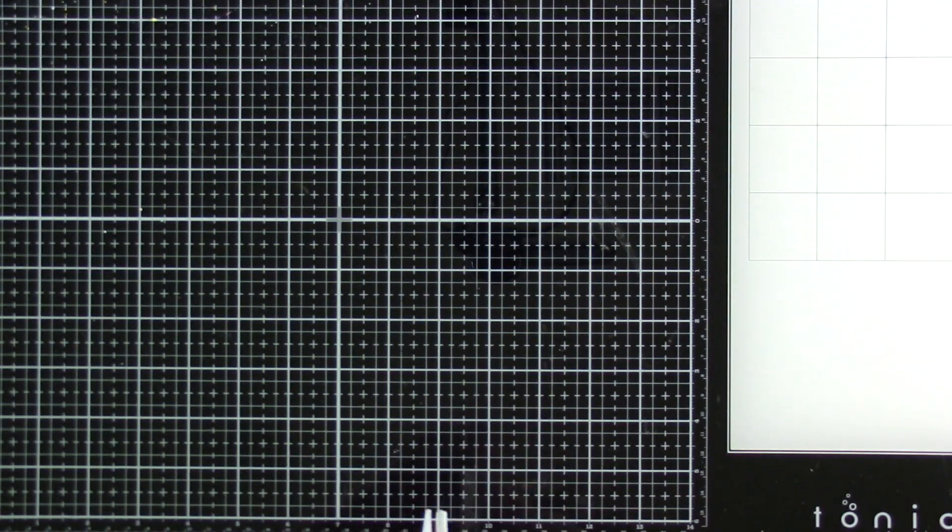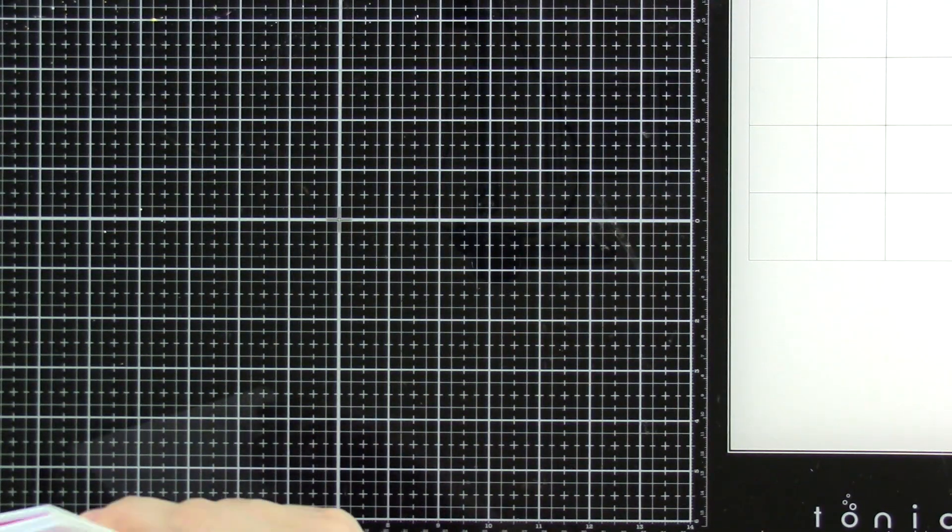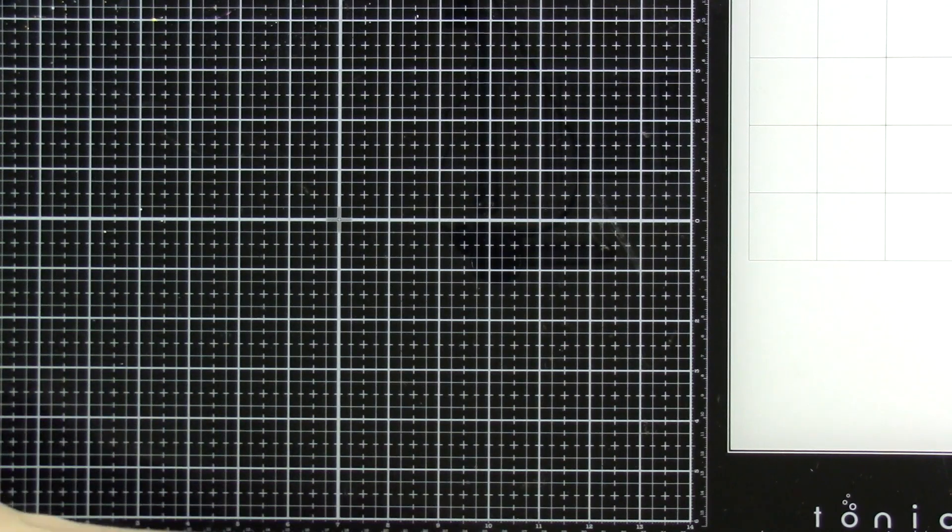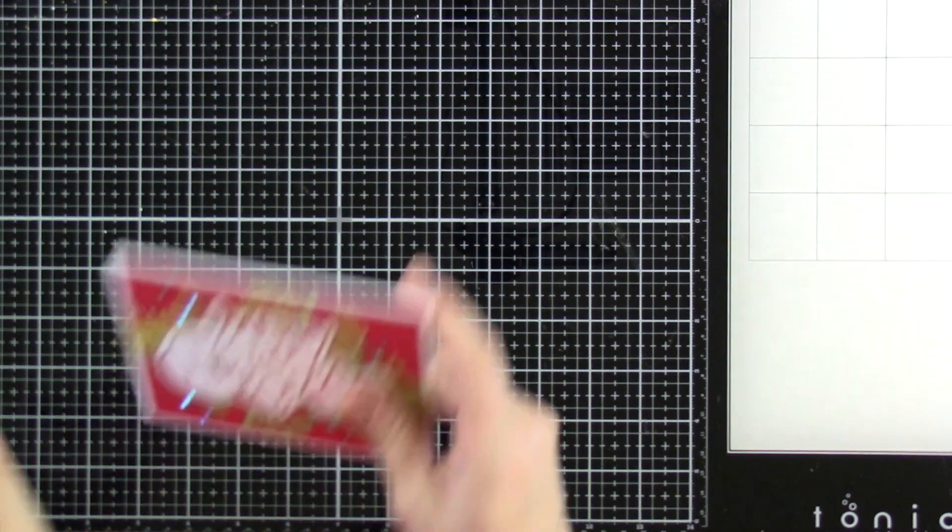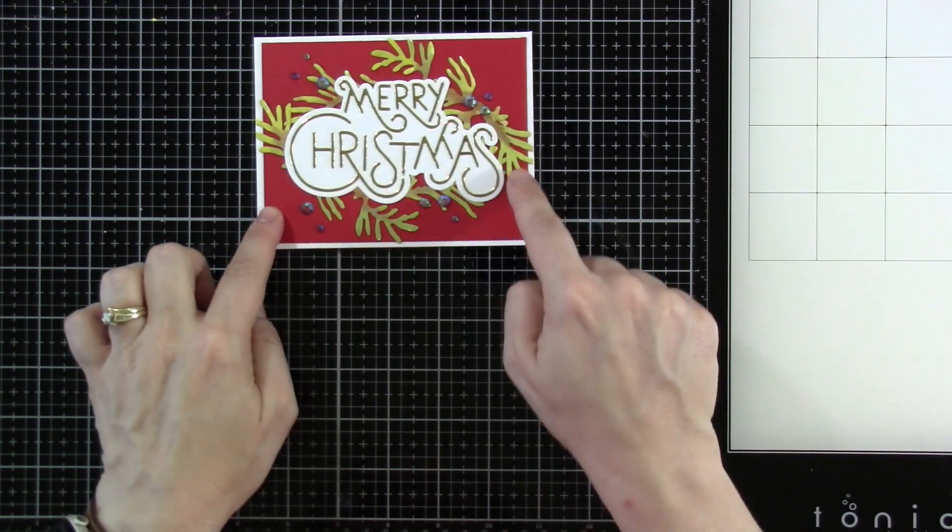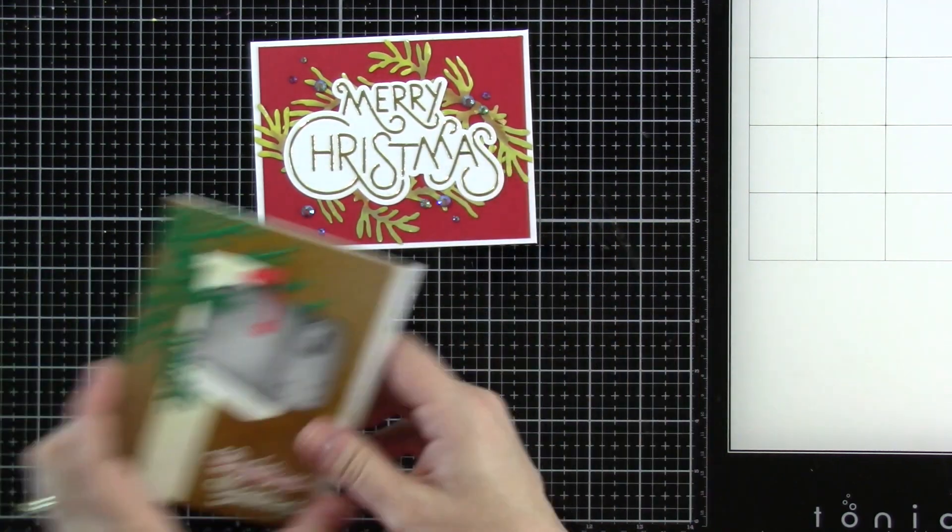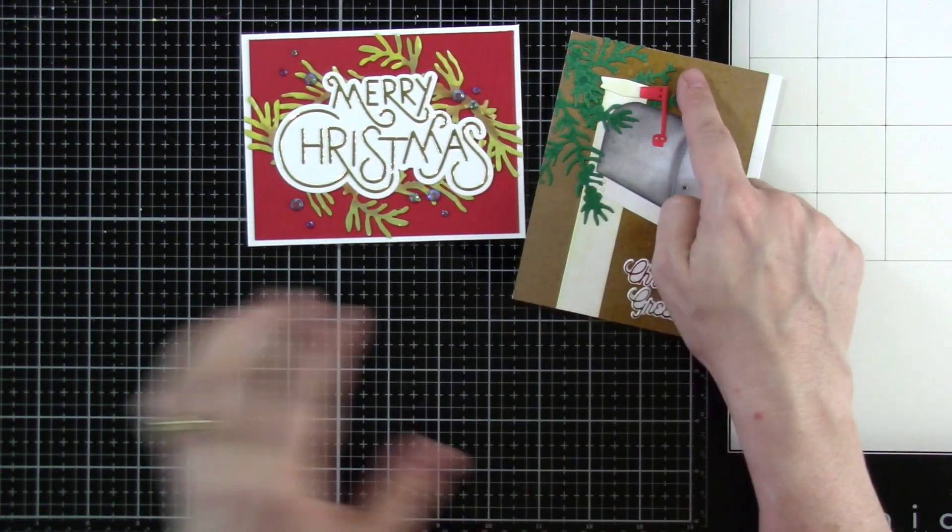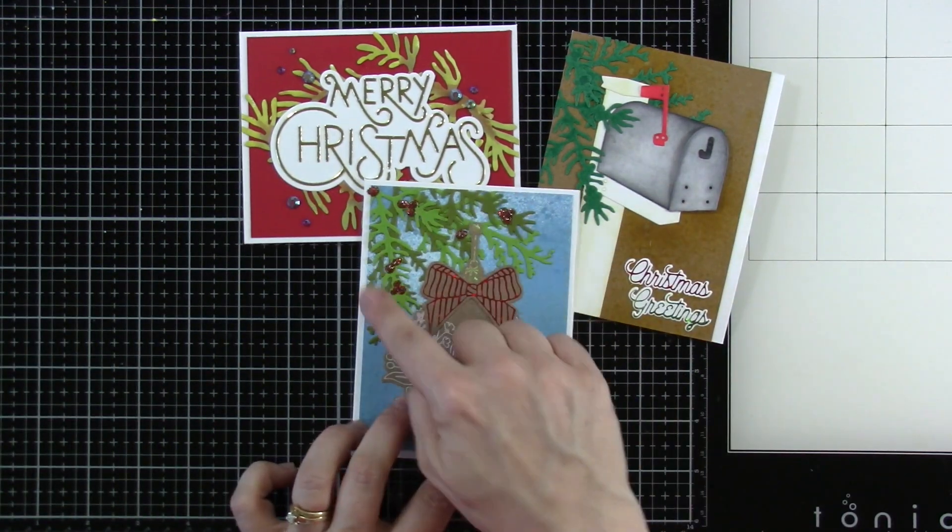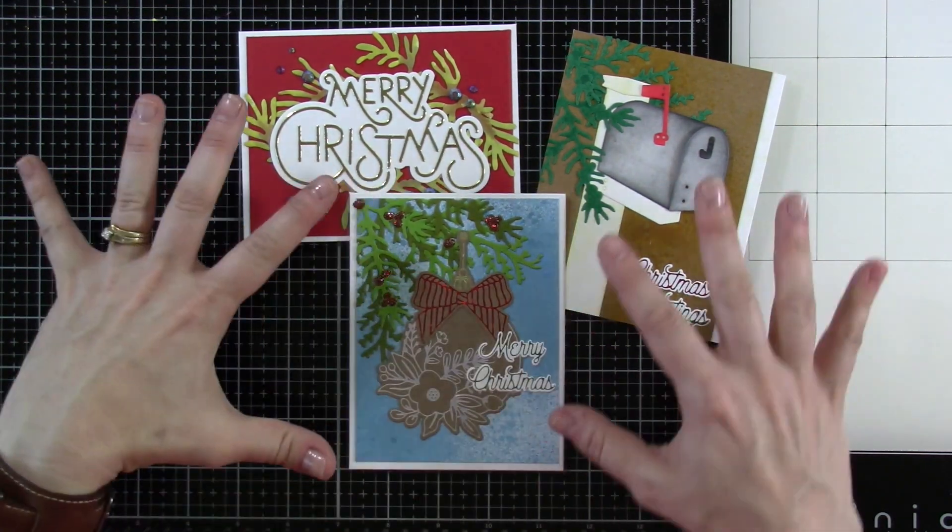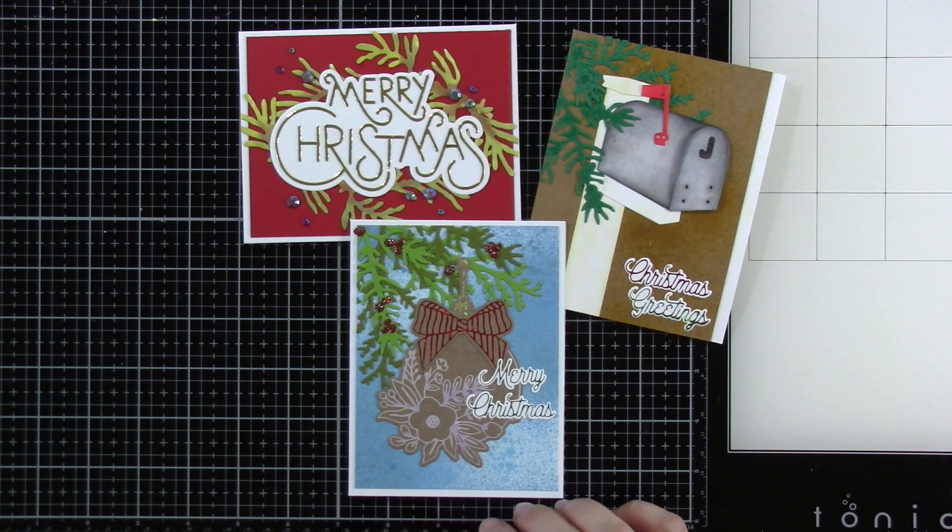Then we have the Winter Garden Collection. The Winter Garden Collection includes the Winter Evergreen. So here's our Winter Evergreen. Here's some Winter Evergreen. We also have some Winter Evergreen here. So I thought it was just super fun to use in all these different ways. It's beautiful.